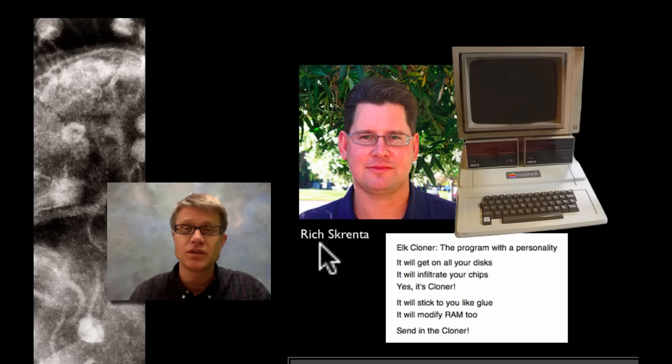In 1982, Richard Scrento, when he was a 15-year-old high school student, was sick of people taking his disks and borrowing his disks. So he basically wrote a program called the Elk Cloner that would copy itself onto the computer and then it would copy itself onto disks that were injected into the computer. Basically it would boot up the 50th time and give you this warning, this little poem. It was really highly infectious. In fact, it was the first really infectious computer virus that was ever written.